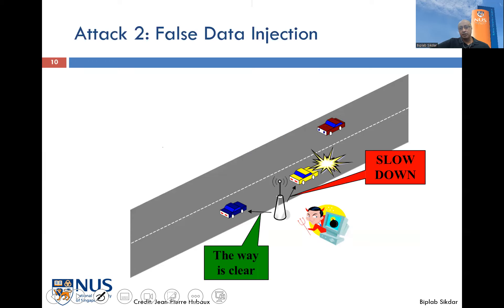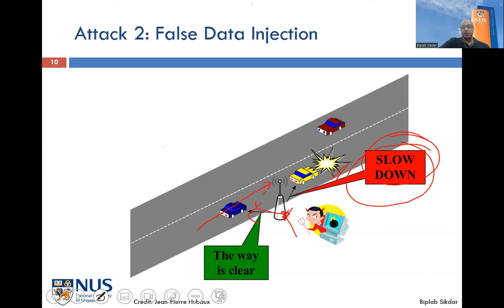A more malicious example: there is an accident somewhere and the message the vehicle should send is 'slow down.' But if somebody has hacked into the roadside unit — which is supposed to broadcast the slow-down message to everybody — it instead sends a message saying everything is clear, you can proceed as normal. Then a car going at normal speed may crash into the vehicles stopped in front.